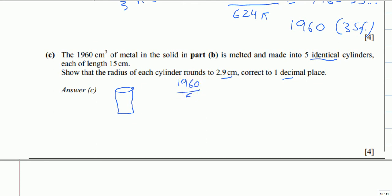1960 divided by 5 gives us 392, so the volume of each cylinder is 392 cm³. We have to use the volume formula to find the radius since we don't have any other information.